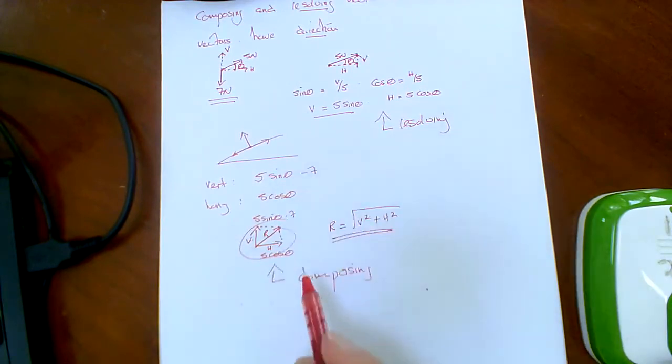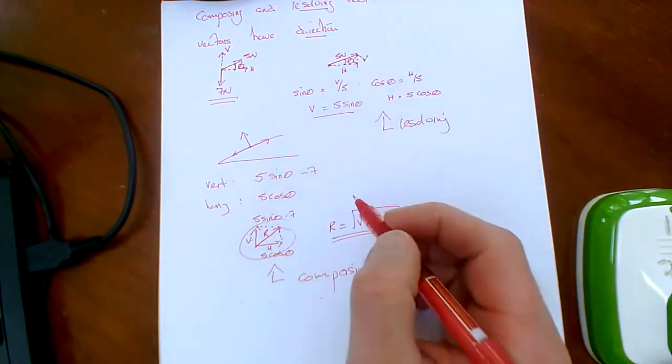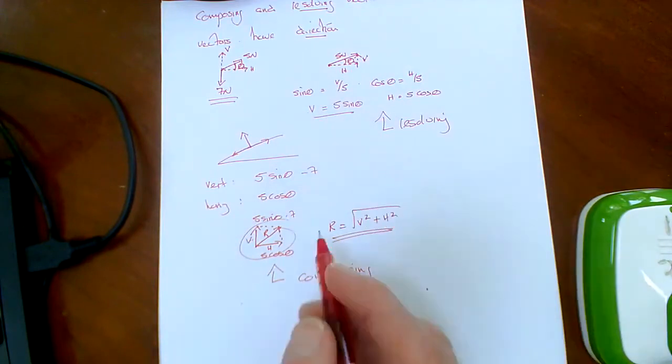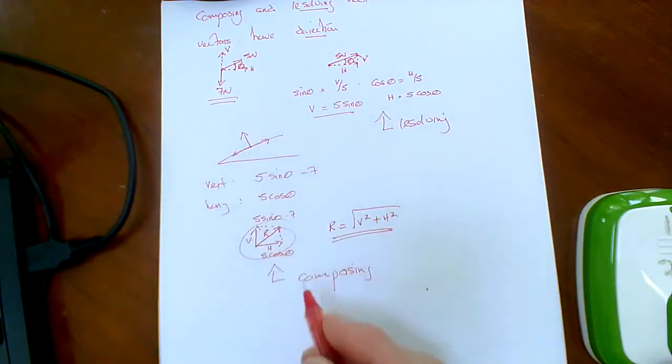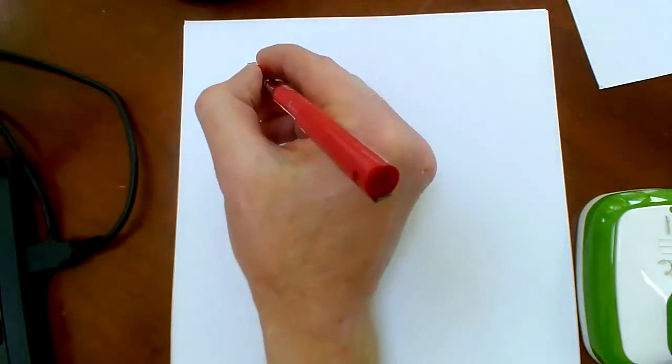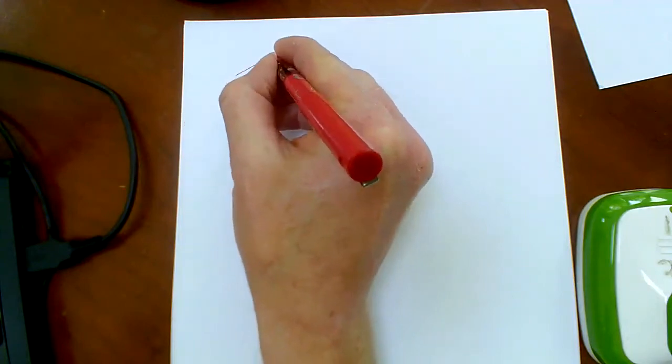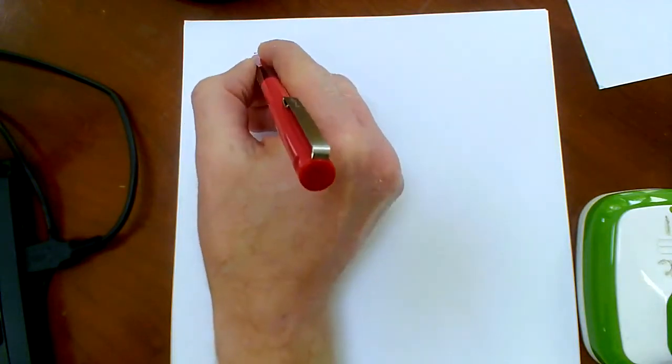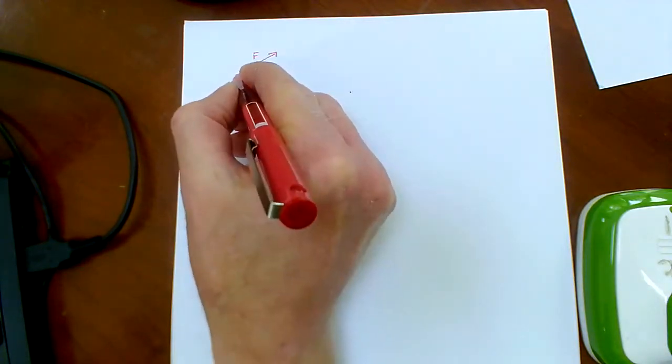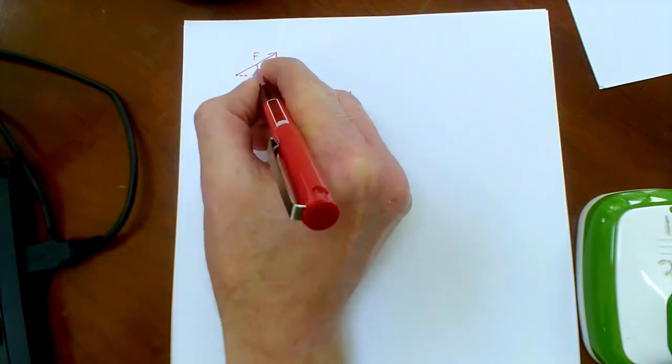Now that's all very well and you can do the whole sine and cos thing by looking at the triangle. But when it comes to forces on slopes, it's a bit more difficult to see the triangle that you have to make. If we take a force F at an angle theta to the horizontal.